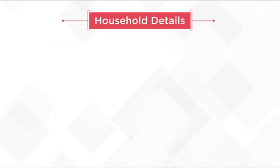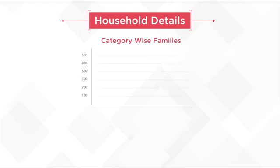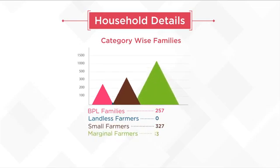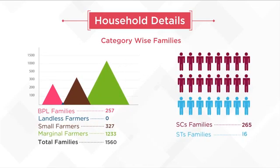In Household Details, we come to know about family-wise categories such as BPL, Landless, Small Farmer, Marginal Farmer, Scheduled Castes and Scheduled Tribes. Under Mahatma Gandhi NREGA, these household categories are given priority on the basis of watershed approach, and this information provides the necessary figures for the planning of agricultural works on these prioritized beneficiaries.